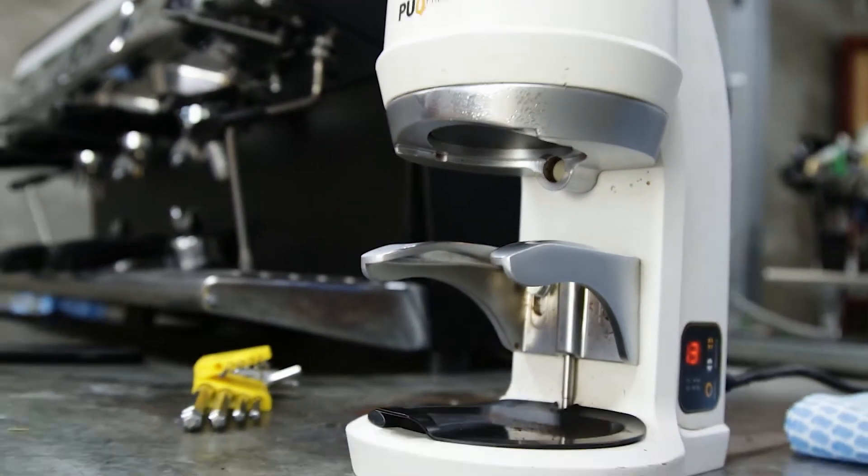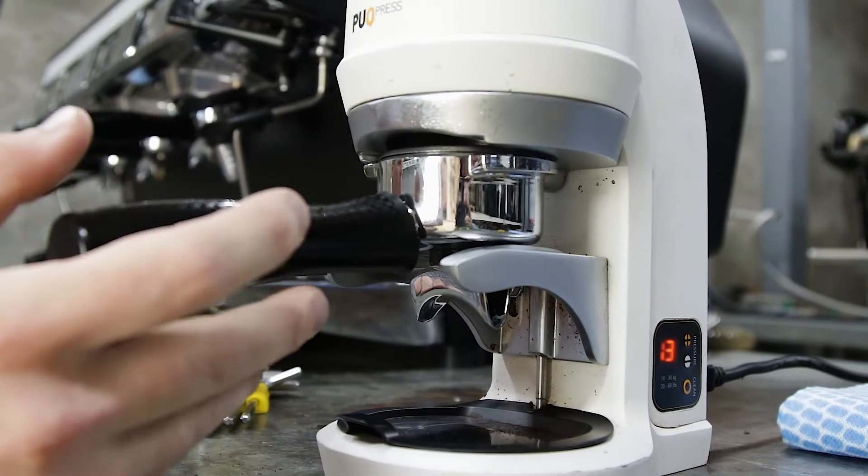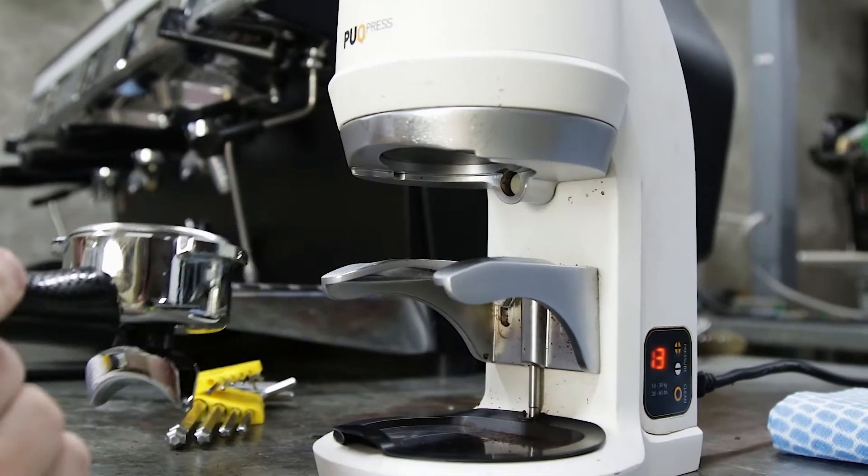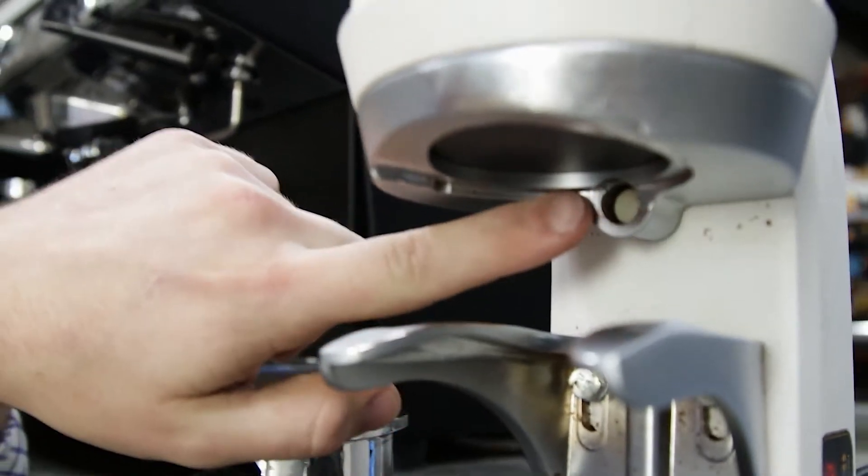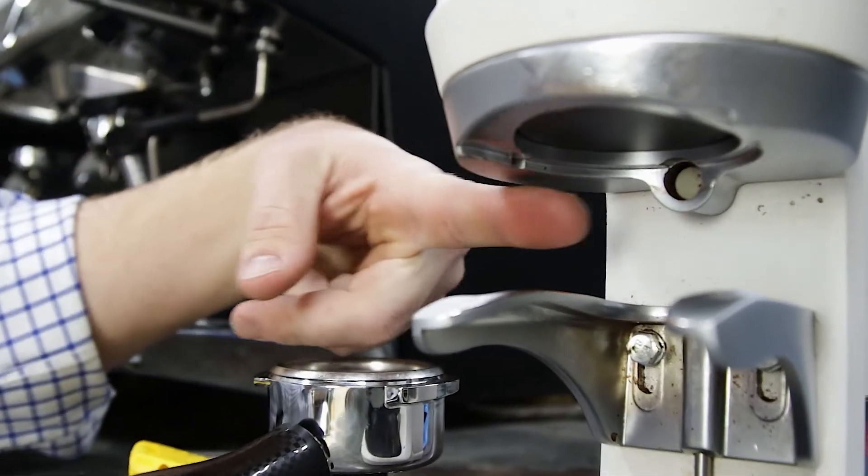So when I put the handle in, it's not completing the circuit because the sensor is too far back. This sensor is meant to be flush with this metal here. So we need to bring it forward.